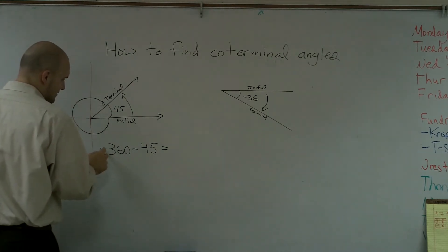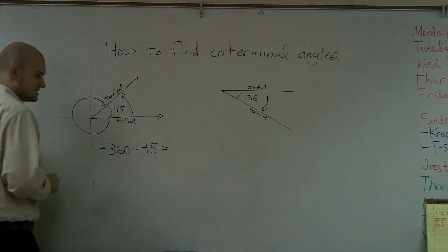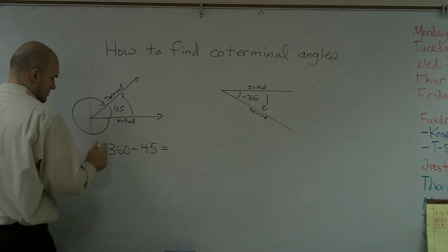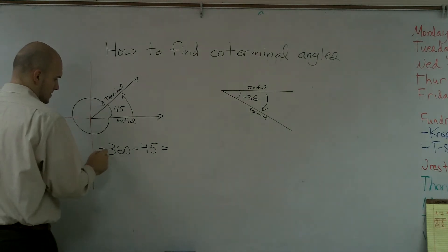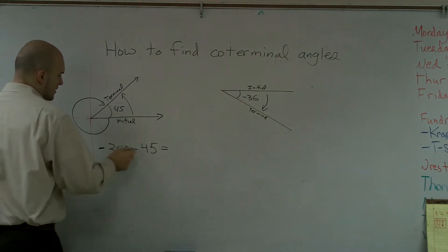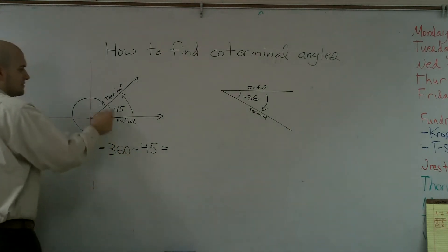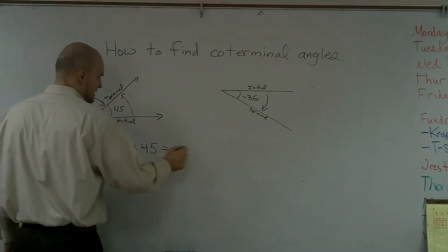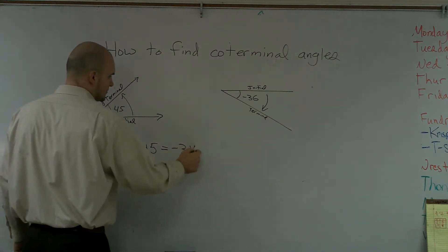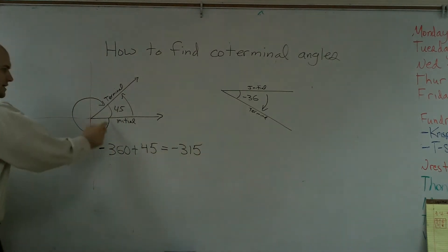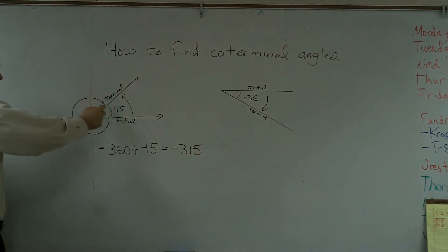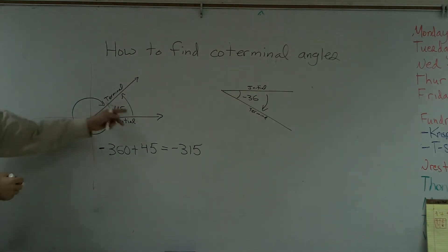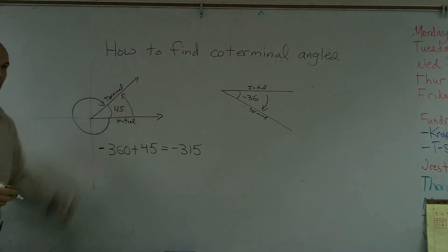So it's going to be negative 360, and then going here it's going to be plus 45, giving me negative 315. So if I go negative 315 in that direction, plus 45 going in the other direction, that will give me negative 315.